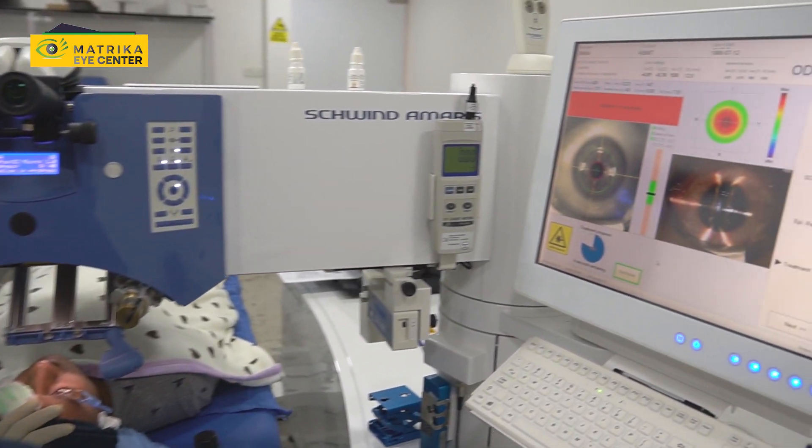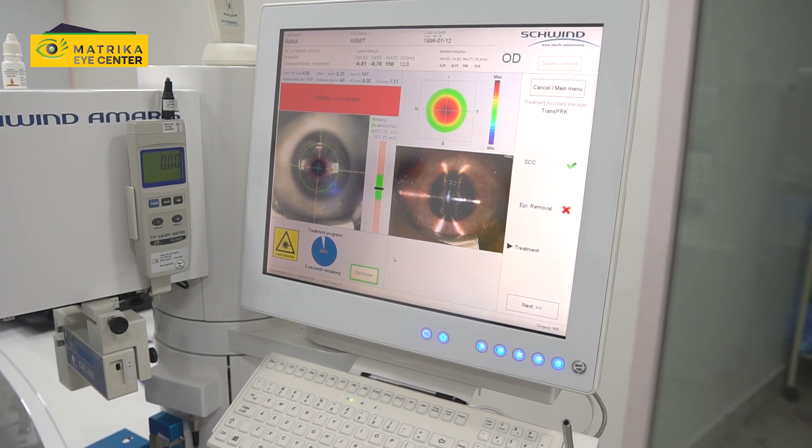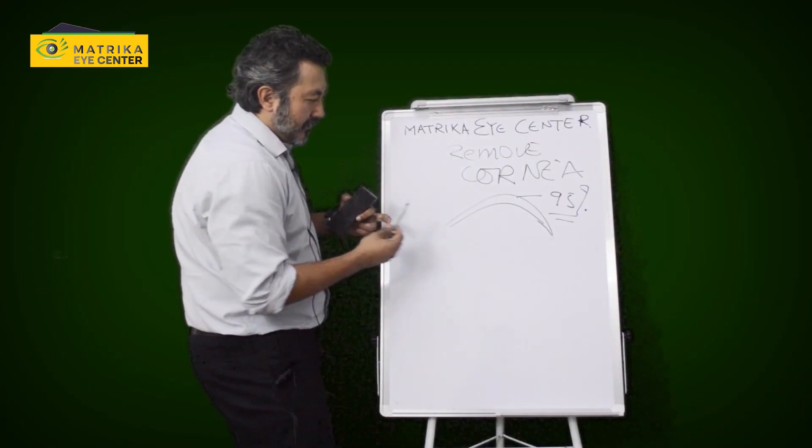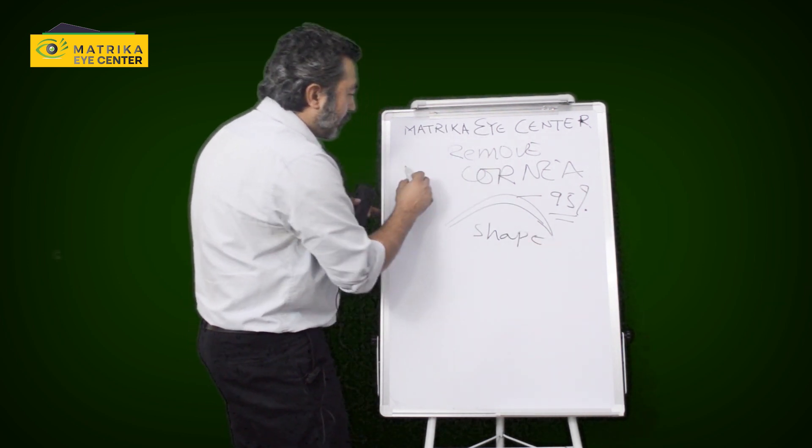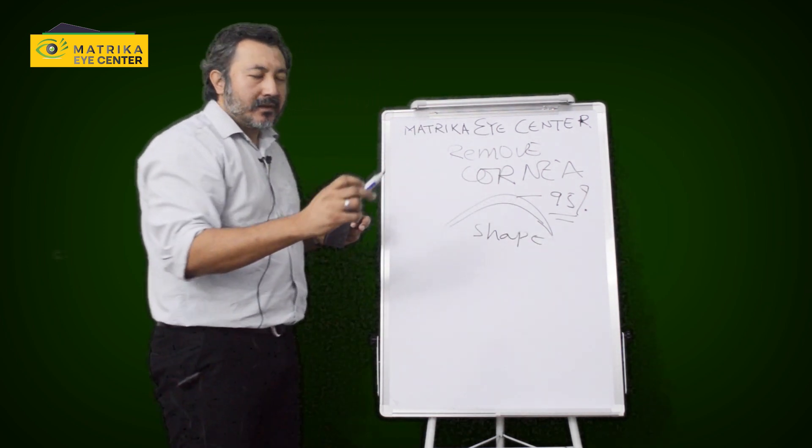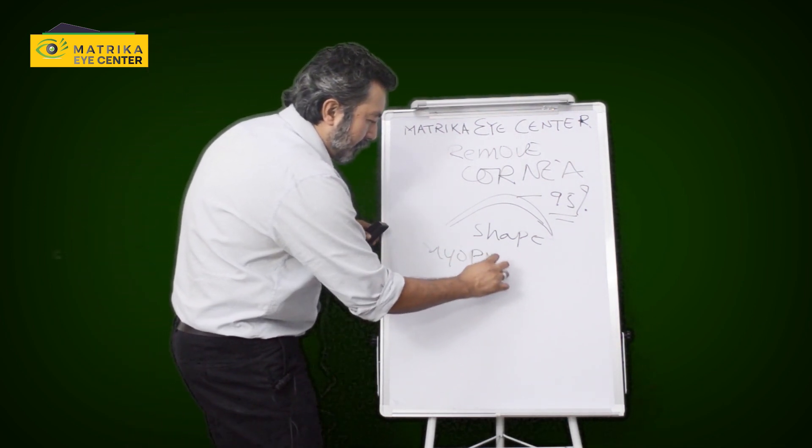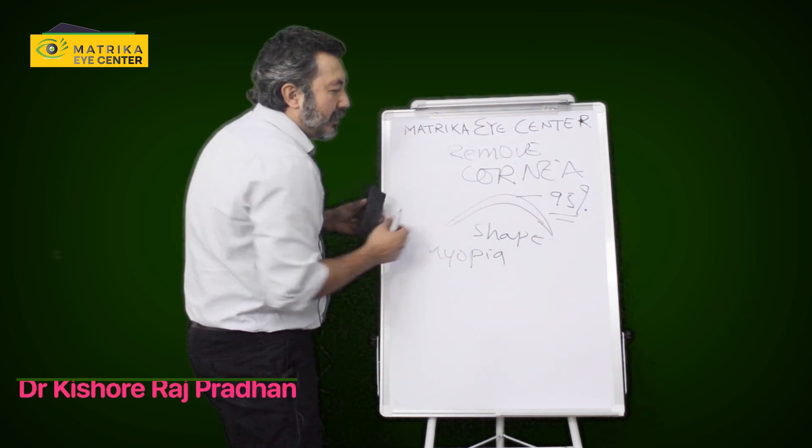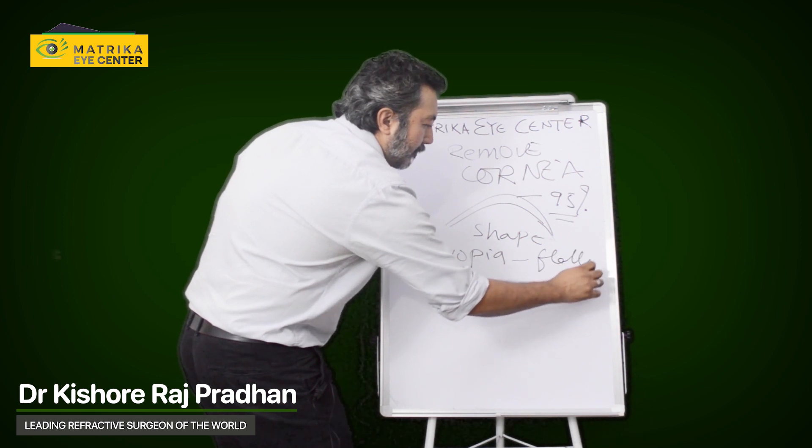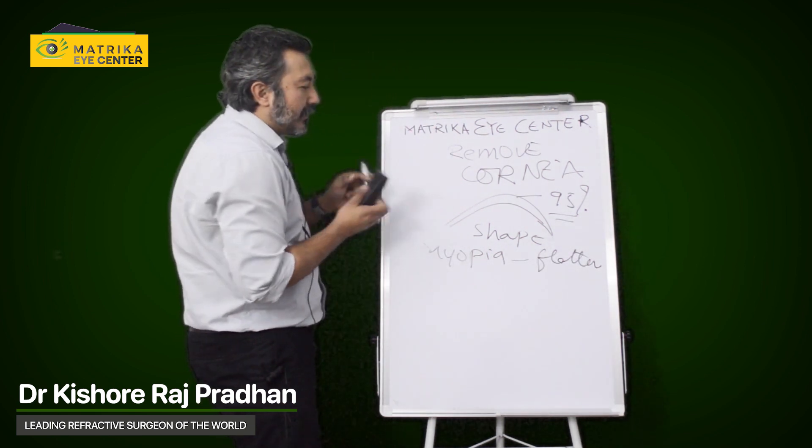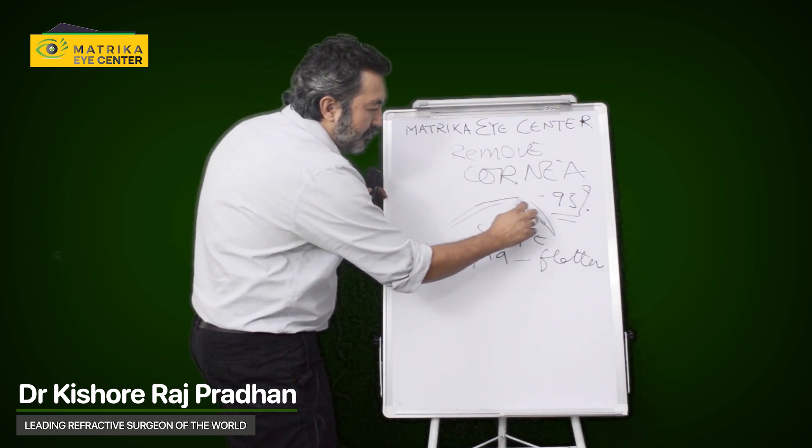What do we do in the cornea? Basically, we are trying to change the shape of the cornea using the two lasers. So in myopia, you basically want to flatten the cornea. You want to make the cornea flat using the laser. So this is the cornea. You just use the laser and you make it flat.